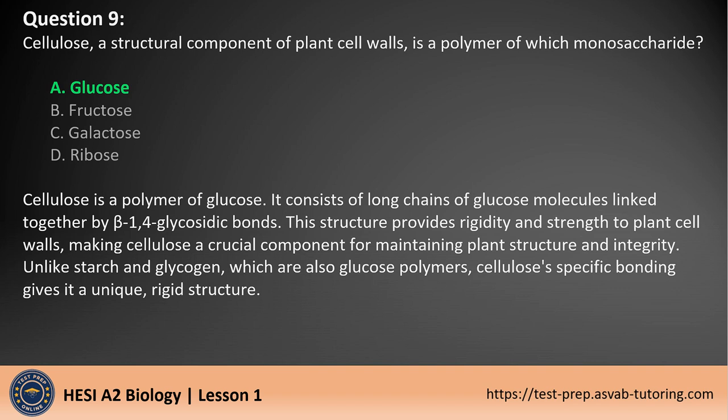Cellulose is a polymer of glucose. It consists of long chains of glucose molecules linked together by beta-1,4 glycosidic bonds. This structure provides rigidity and strength to plant cell walls, making cellulose a crucial component for maintaining plant structure and integrity. Unlike starch and glycogen, which are also glucose polymers, cellulose's specific bonding gives it a unique, rigid structure.